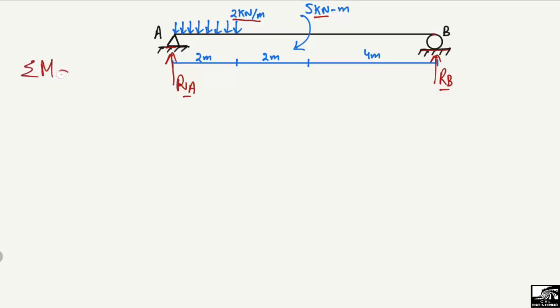Starting with the first equilibrium equation: summation of moments at any point equals zero. We assume summation of moments at point A equals zero. We take clockwise moments as positive and anti-clockwise moments as negative.